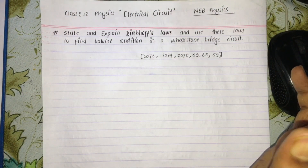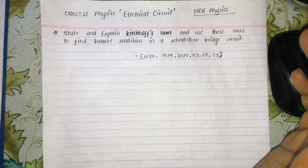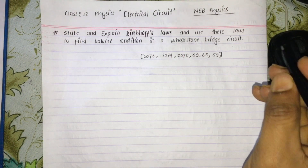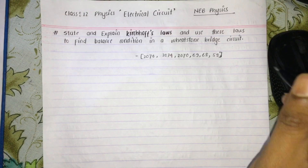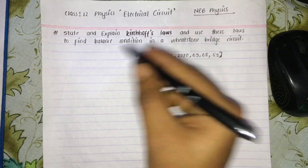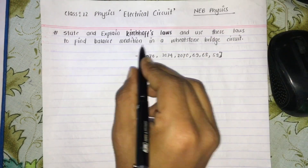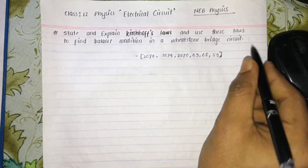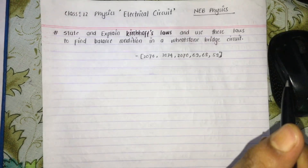Hello friends. I am covering Class 12 physics, electrical circuits. The most repeated question is: state Kirchhoff's laws and use these laws to find the balance condition in a Wheatstone bridge circuit.